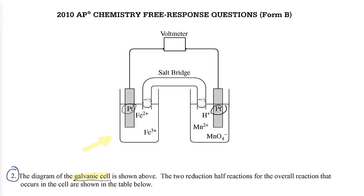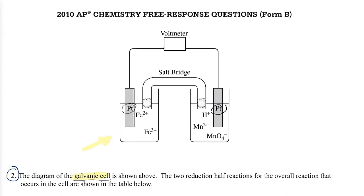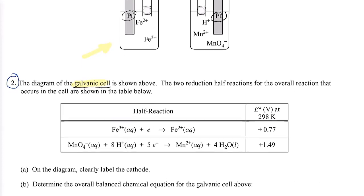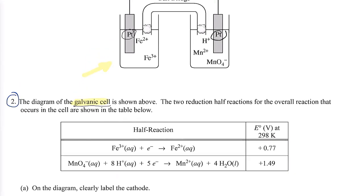When we did the galvanic and electrolytic cell, we stayed primarily with simpler half reactions. Now I'm reintroducing this with more complex reactions and the balancing skill we learned previously. The first step is labeling the cathode. You're given standard reduction potentials — notice they're all written as reductions. I can see electrons are written on the reactant side, meaning they're gaining electrons. We call that reduction.